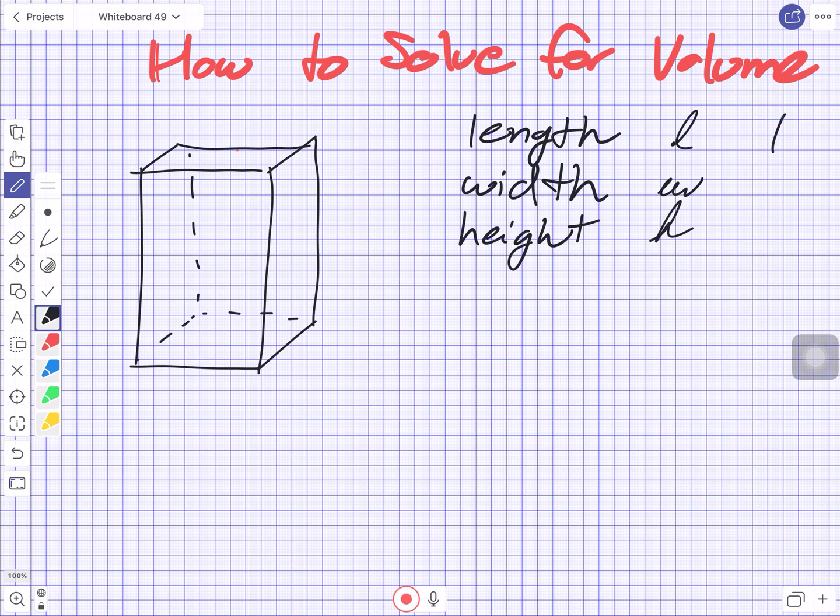You can just write it however you like. We're using letters instead of writing the whole word out. To find the volume of something like this, you actually have to multiply the length of every side. Let's call these the lengths, these the widths, and these the heights. I'm going to highlight them so we know that's our width and that's our length.